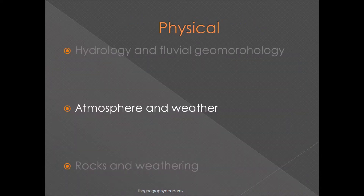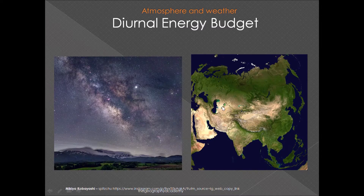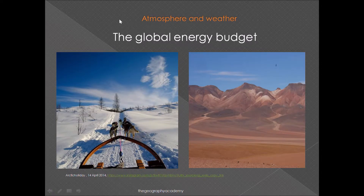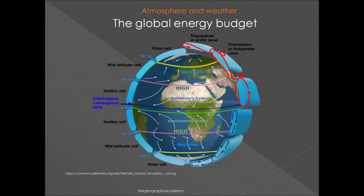The next section is atmosphere and weather. First you'll look at the diurnal energy budget — the difference between night and day — how we receive incoming solar radiation from the Sun, and what happens at night when all that energy is escaping. The global energy budget then explains how we get our climate zones, from dry deserts to dry polar regions, and why other areas are full of vegetation like rainforests. You'll need to understand the different systems in both the atmosphere and the ocean, including circulations like the three-cell model, pressure belts, and differences between land and ocean. This is one of the most difficult areas of the course where students often seek the most help.